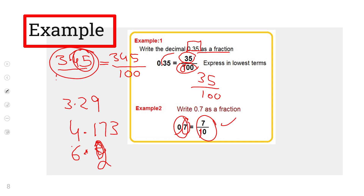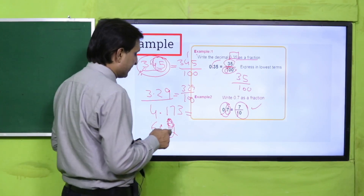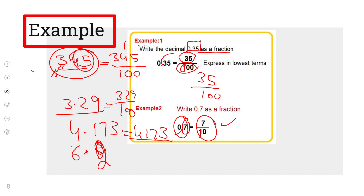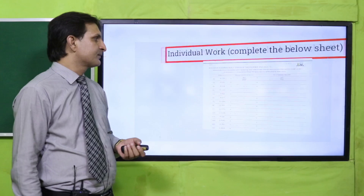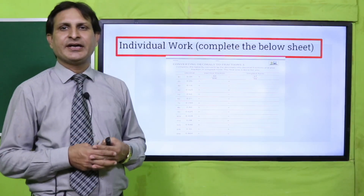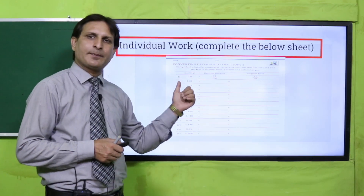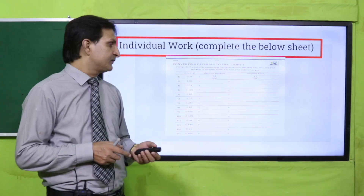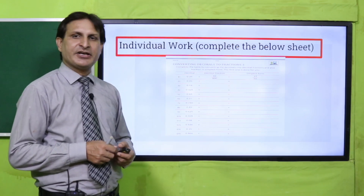Three point four five जैसी fraction का denominator hundred है यानी power of ten। इसी तरह three point two nine में भी three two nine over hundred बनेगा। Four point one seven three में three digits हैं तो four one seven three divided by one thousand बनेगा। Six point two में six two over ten बनेगा — यह decimal की other form of fraction بن گئے۔